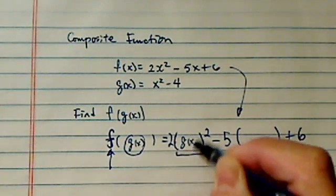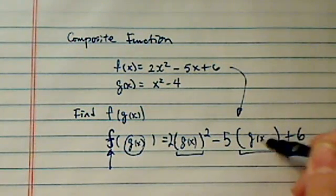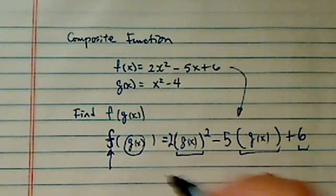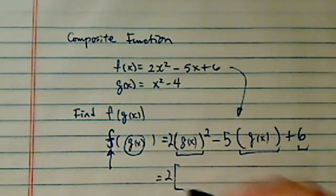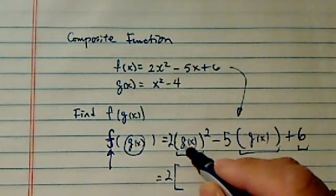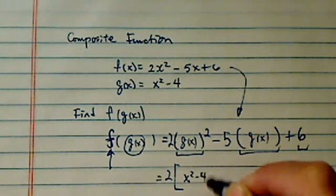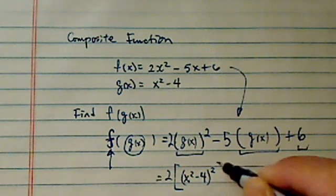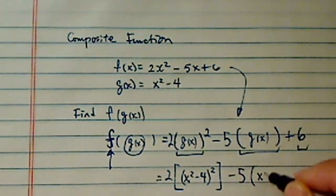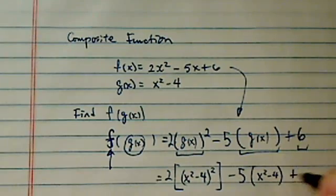So if I give you g(x), I'll put g(x) into the function f(x). Now from here, all I have to do is substitute g(x). That's (x² - 4), the whole thing squared, minus 5 times (x² - 4) plus 6.